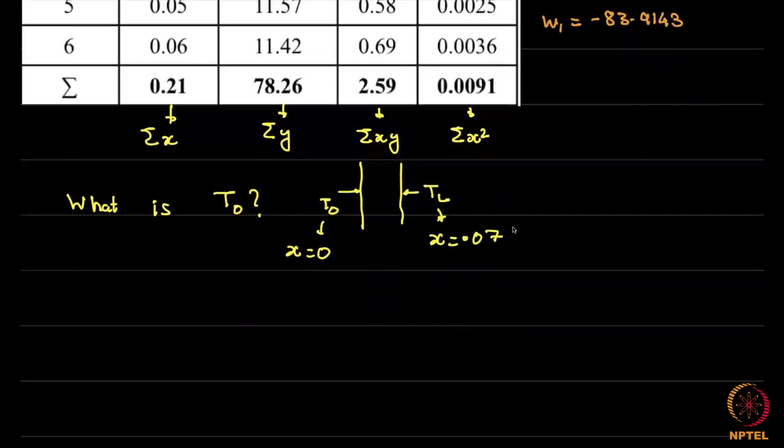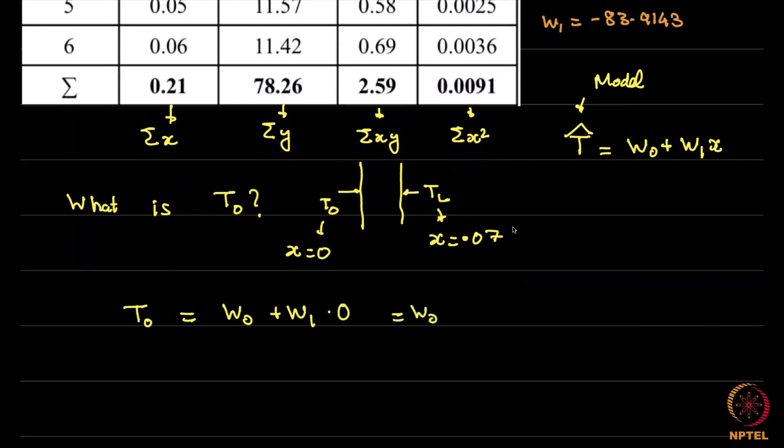This is at the location x equal to 0.07. So if we plug in these values, we now notice T0 is, so remember the temperature, this is our model. The temperature is w0 plus w1x. So T0 will be w0 plus w1 at x equal to 0. This is simply w0 and that gives us the temperature which is approximately 15.98 degree centigrade.